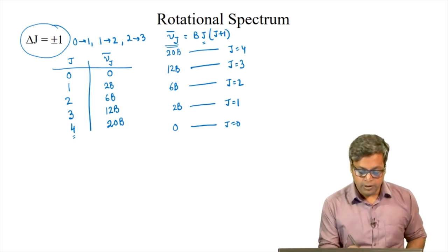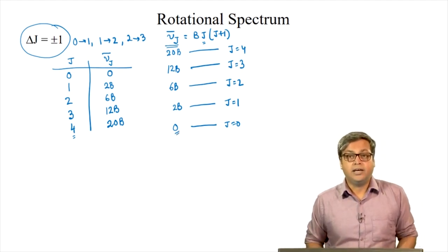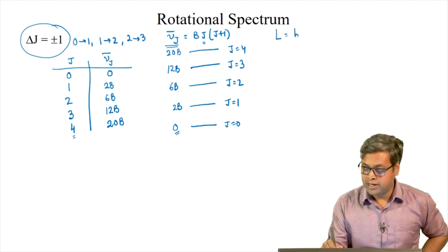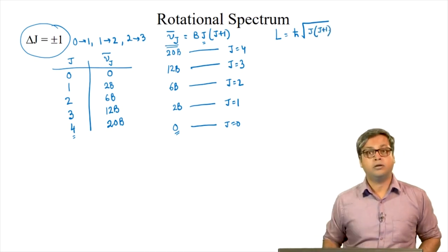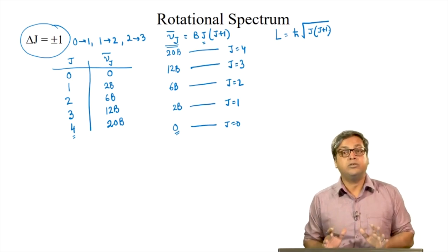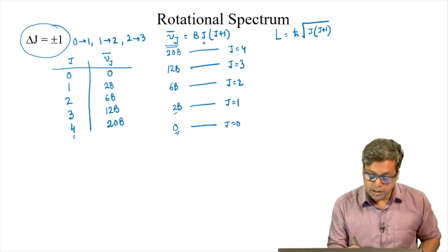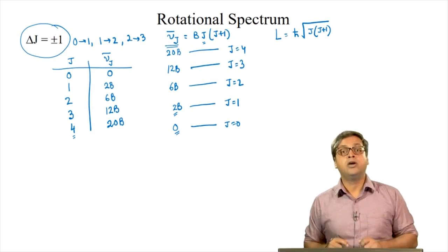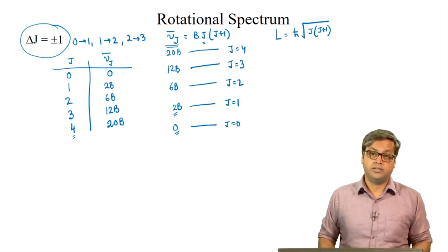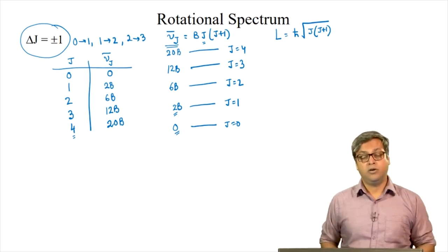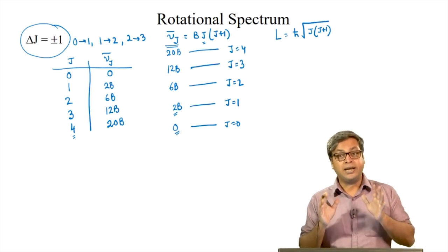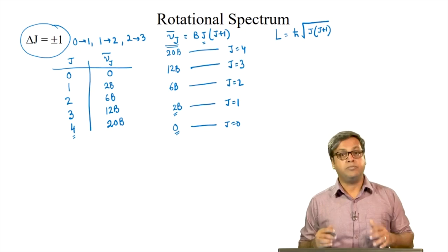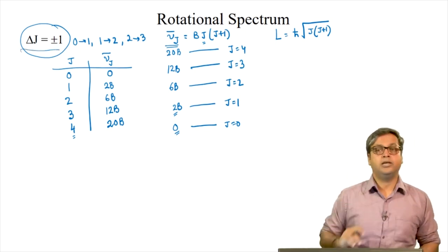For J = 0, the energy is 0, meaning the molecule is not rotating at all. This is because the angular momentum L = ℏ√(J(J+1)) is zero when J = 0. For J = 1, the energy is 2B and the rotating molecule has its lowest angular momentum. As transitions happen between energy levels, a rotational transition occurs from level J to level J+1, consistent with the selection rule ΔJ = ±1.